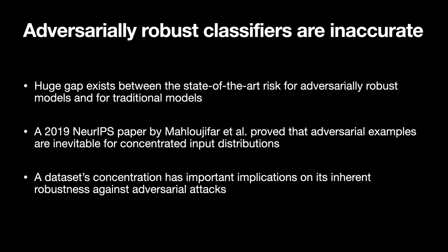Currently, there's a huge gap between the performance of state-of-the-art adversarially robust classifiers and traditional classifiers. The reasons for this gap's existence are not fully understood, which means it's an open problem whether or not this gap can be closed. Malu Jafar et al. showed in a 2019 NIPS paper that adversarial examples are inevitable if the dataset is concentrated with respect to the adversary's perturbational capabilities. Therefore, the question of whether or not a dataset is concentrated has important implications on whether adversarially robust classifiers might ever be able to achieve near traditional state-of-the-art performance.